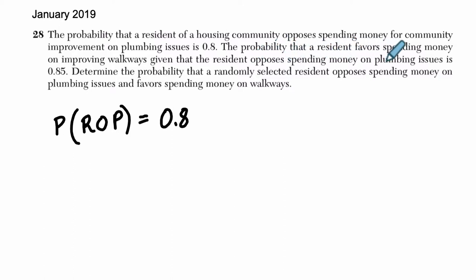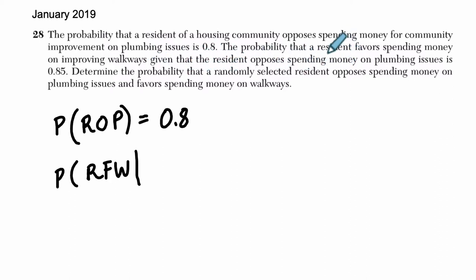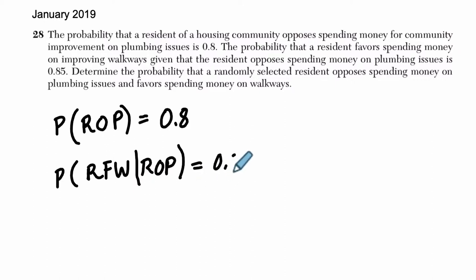Then the probability that a resident favors spending money on improving walkways — so we're talking about walkways now, not plumbing. Given that the resident... I'm going to abbreviate this: spending money on improving walkways, I'll say resident favors walkways. I saw 'given that,' so this is a conditional probability. Given that the resident opposes spending money on plumbing issues — so given that they are R-O-P, resident opposes spending money on plumbing — is 0.85.